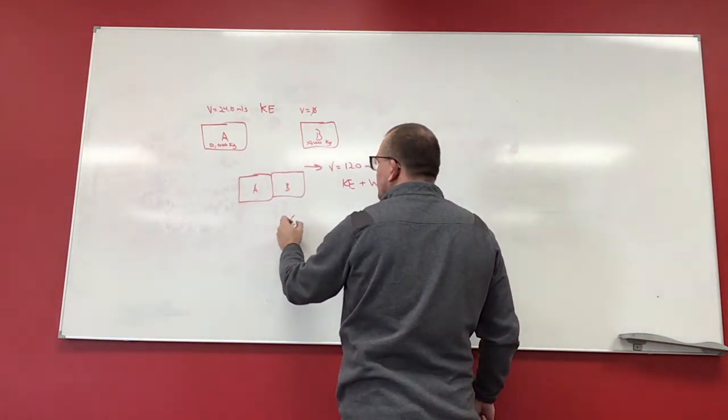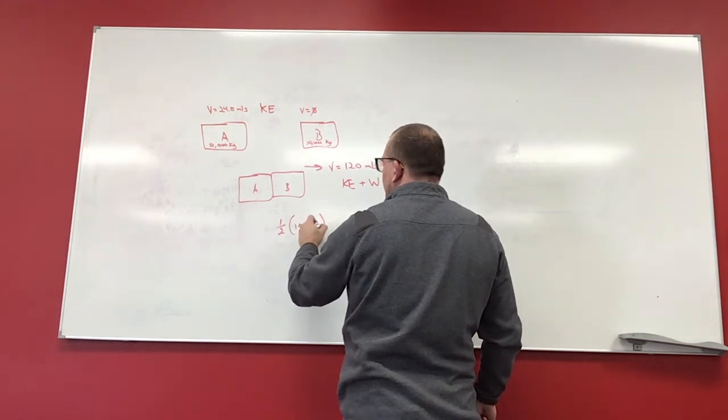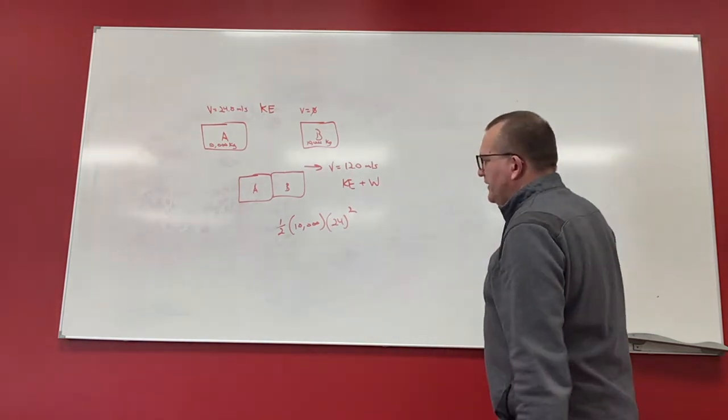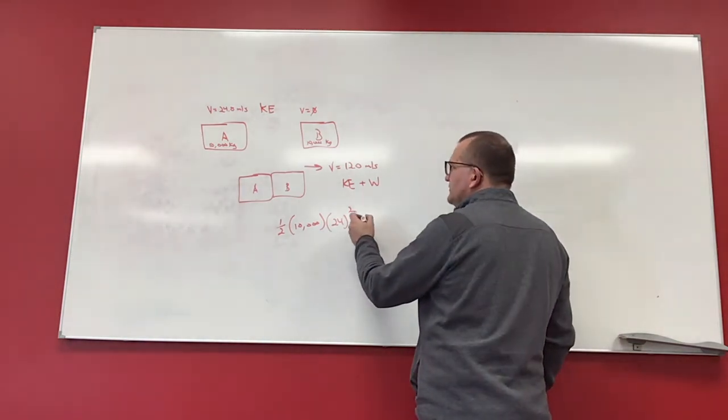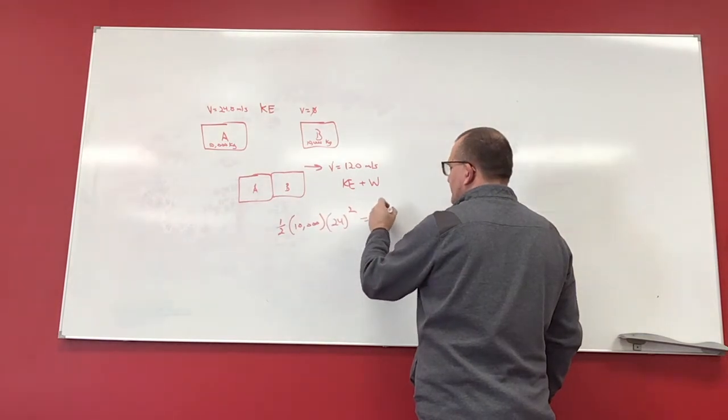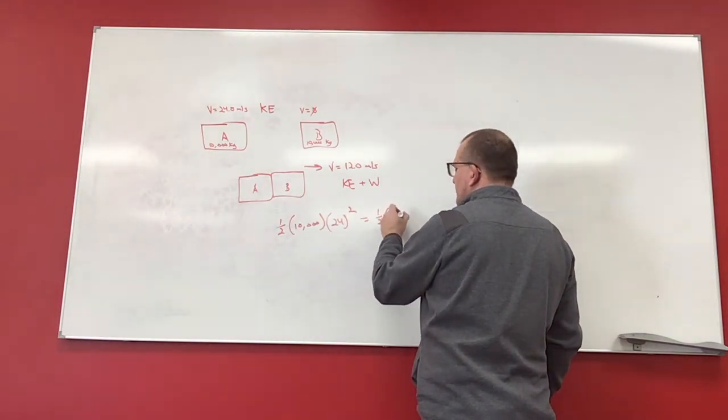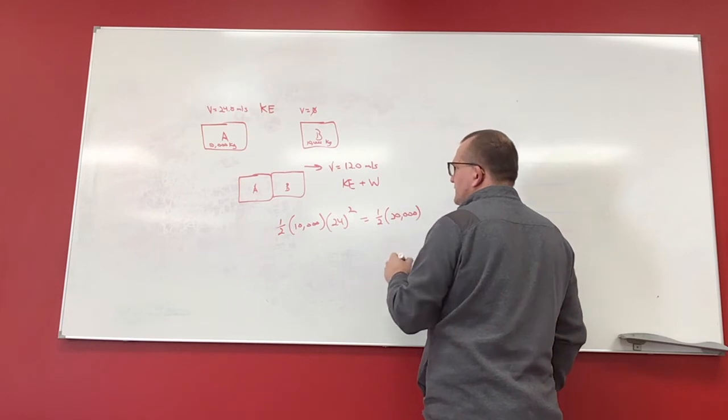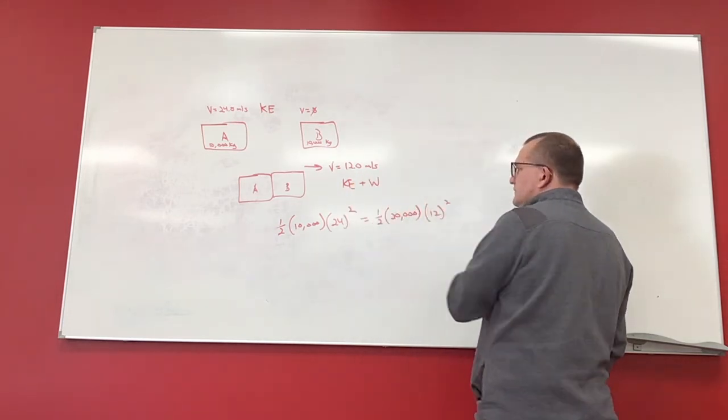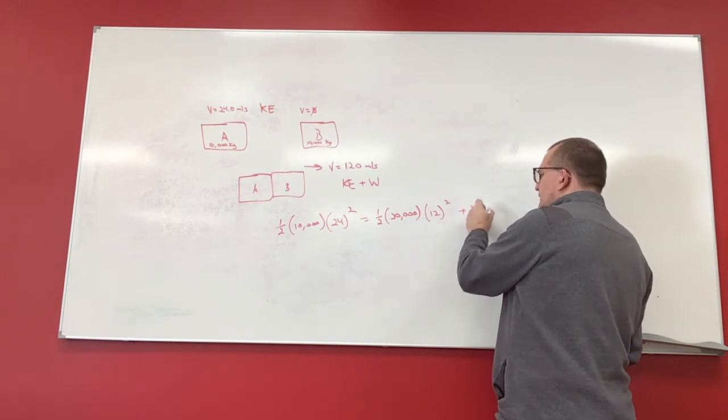So it's one-half, 10,000 times 24 squared, right? One-half mV squared, equal to this, which is the kinetic energy here, which is one-half. Remember, the masses are combined, so it's 20,000. And then we found the velocity to be 12 squared plus W.